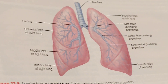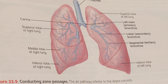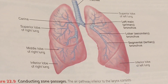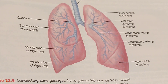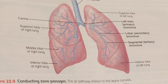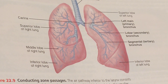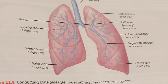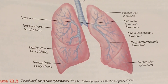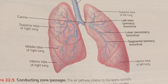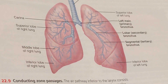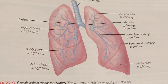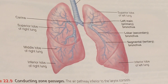These actions increase thoracic volume by almost 500 milliliters. During inspiration, when the thoracic dimensions increase, the lungs are stretched and the intrapulmonary volume increases. As a result, the intrapulmonary pressure drops and air from the atmosphere rushes to fill the space.